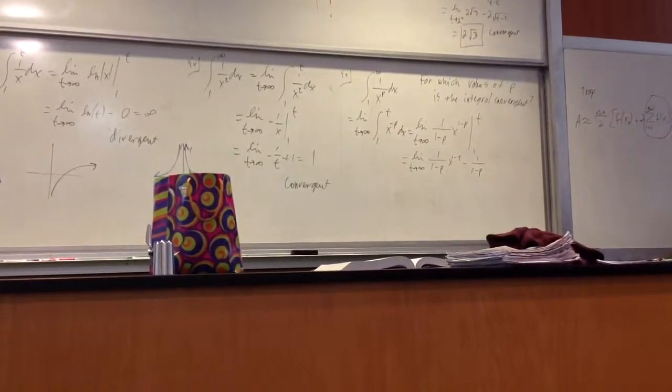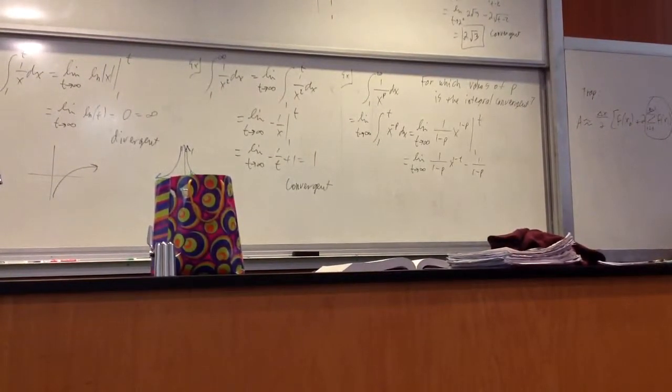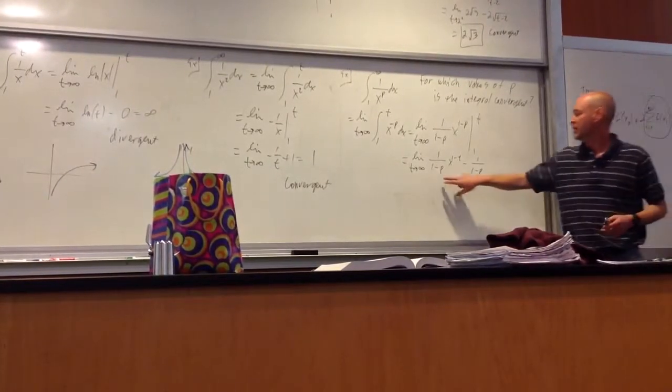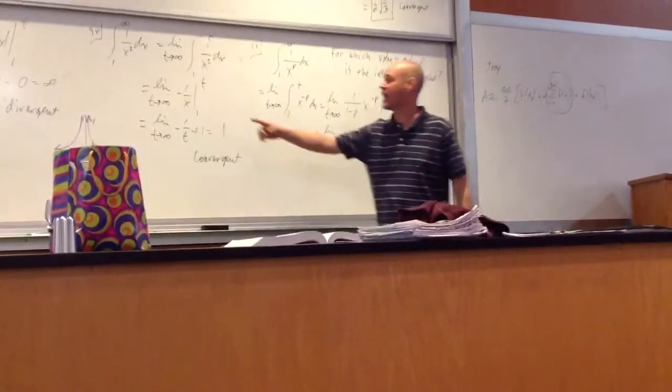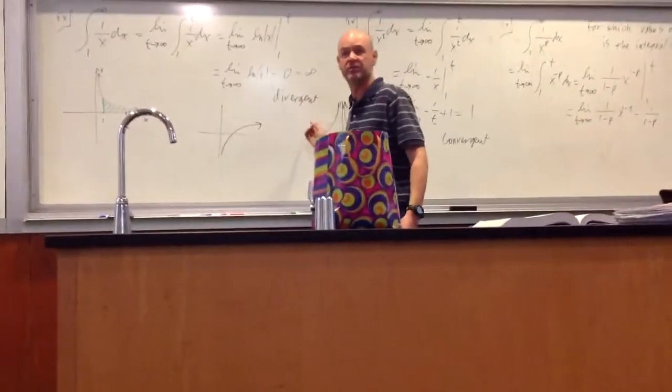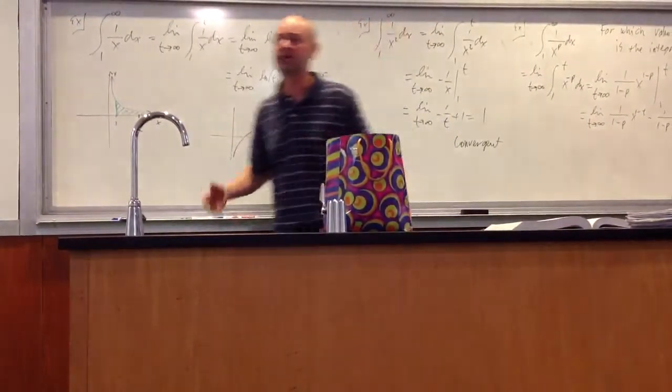One to any power is always one, right? Now, we can't do this if p equals one. But we already know what happens when p equals one. It's divergent. So we can automatically toss that.